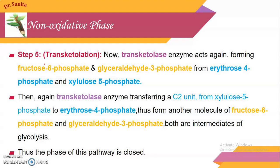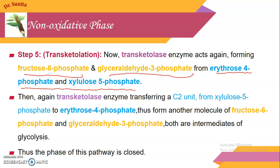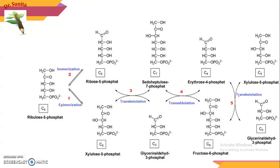In step 5, transketolation occurs again. The transketolase enzyme acts again, forming fructose-6-phosphate and glyceraldehyde-3-phosphate from erythrose-4-phosphate and xylulose-5-phosphate. Here, erythrose-4-phosphate and xylulose-5-phosphate react: since 4 + 5 = 9 carbons, they rearrange to form 6-carbon fructose-6-phosphate and 3-carbon glyceraldehyde-3-phosphate.